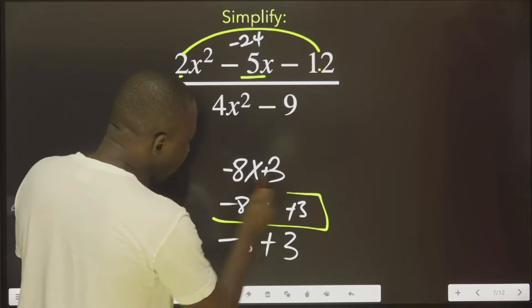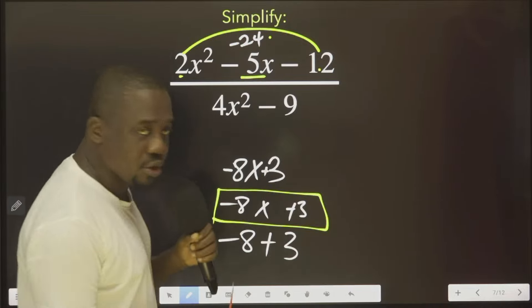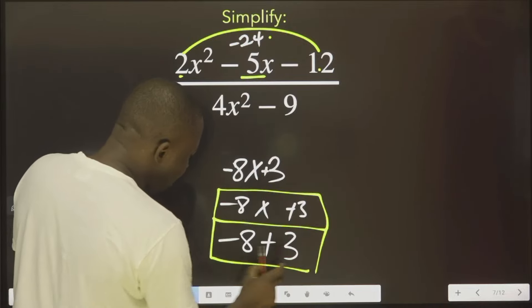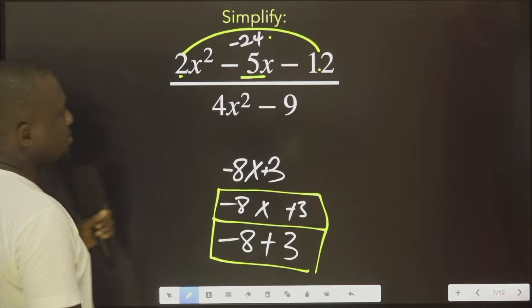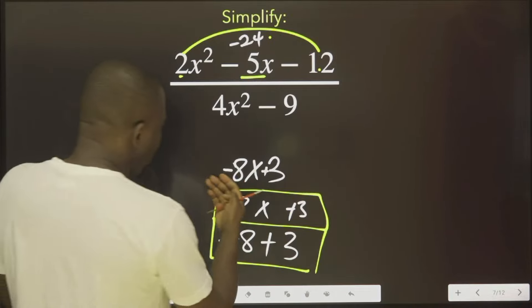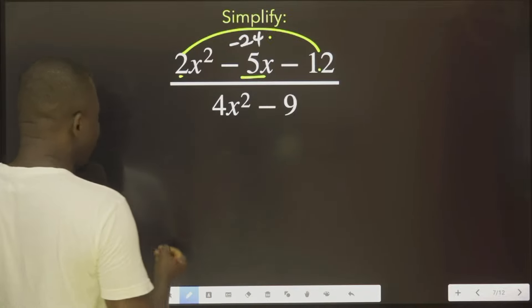If I multiply this, I'm going to have minus 24. And if I bring this together, minus 8 plus 3, I'm going to have minus 5. Therefore, the two values are minus 8 and plus 3.